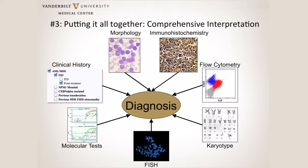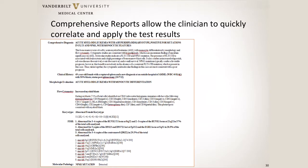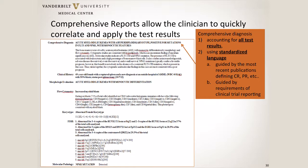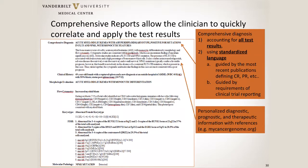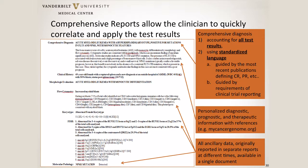We take information from all of those different ancillary tests and funnel it into a single diagnosis in a comprehensive report. Our comprehensive reports have a comprehensive diagnosis that accounts for all testing results, using standardized language we all worked on as teams — guided by the most recent publications defining CR and PR and by the requirements of clinical trial reporting. We have an interpretation as well, with partially canned comments to help suggest what a combination of mutations might mean. And all of the ancillary data, which originally came out in separate reports at different times, is located in a single report together.